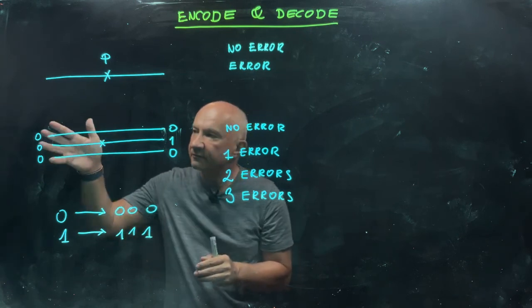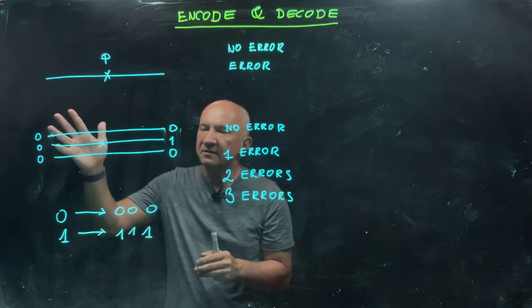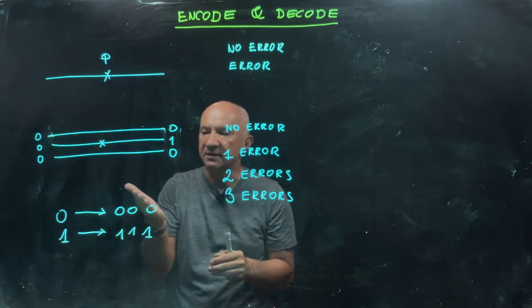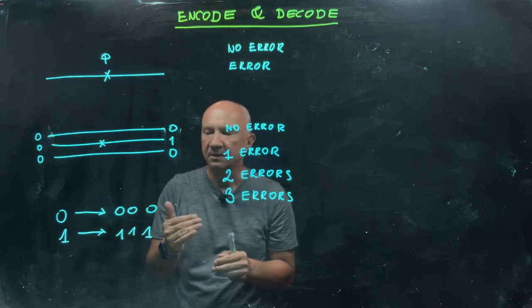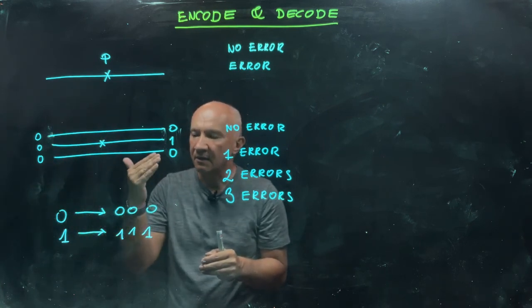We send three bits through this channel. Whenever we want to send zero, we repeat zero three times, so zero is encoded as zero-zero-zero. Whenever we want to send one, we encode one as one-one-one—a very simple repetition code.